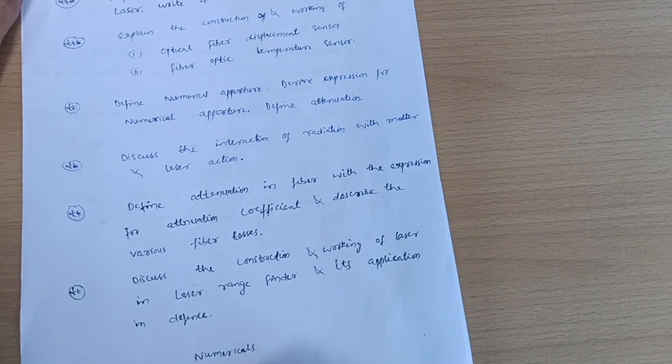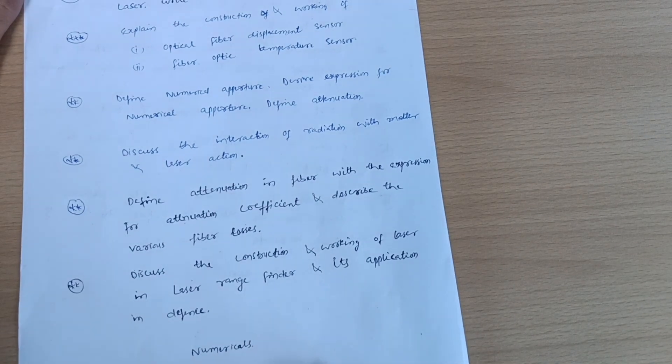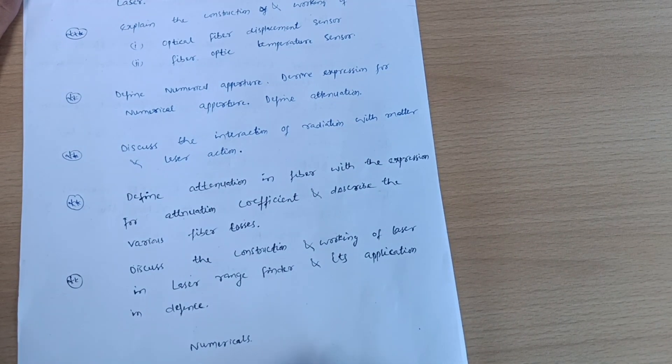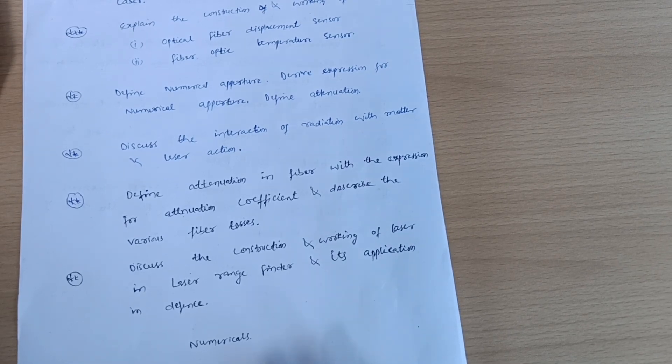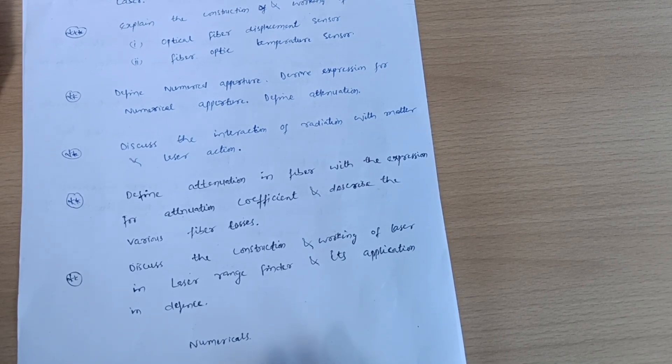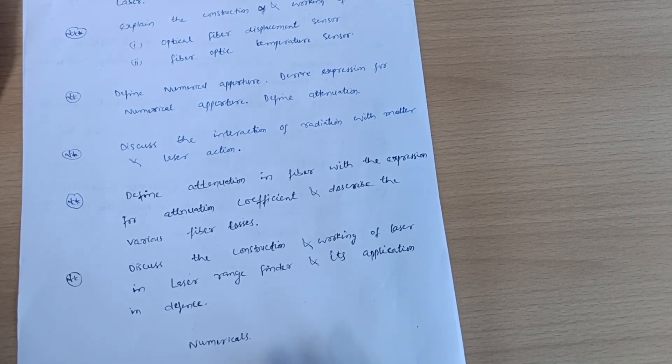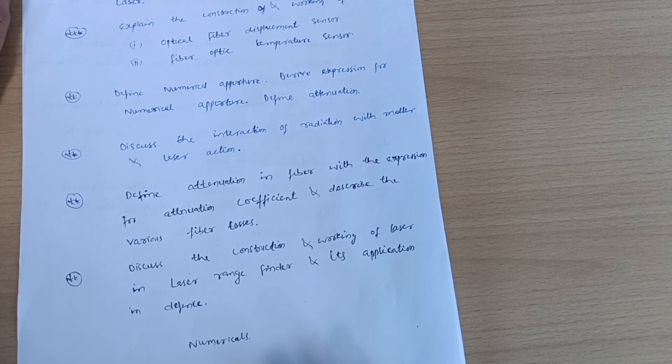As you already know, in physics there is the intermixing of numericals and theoretical portions, so you should not leave the numerical part. Numerical part is very easier, it is not like PU first or PU second physics, very simple. Only thing is you should recognize what does the term denote over there in the questions or in the numericals.